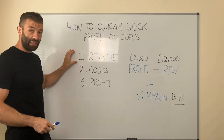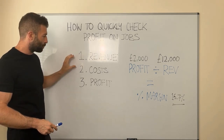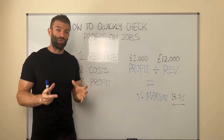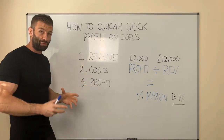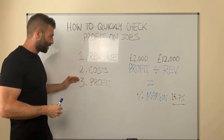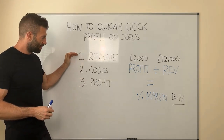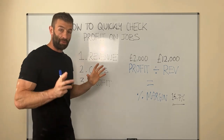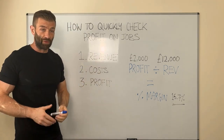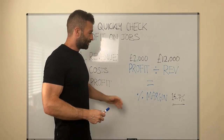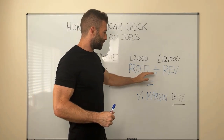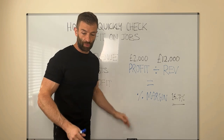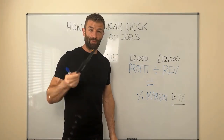You need to understand: if you had a £30,000 job with costs of £20,000, what did it physically cost you to do once it was all said and done? Then you'll have your profit figure. So you know the customer paid you this, the costs were this, so the profit is this value. To work out the profit margin — the actual true profitability of the job — follow this simple formula: profit divided by revenue gives you the accurate margin.